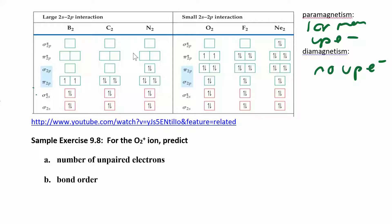Let's see how we can use molecular orbital diagrams to answer questions like: for O2 plus, how many unpaired electrons would we have and what would the bond order be?